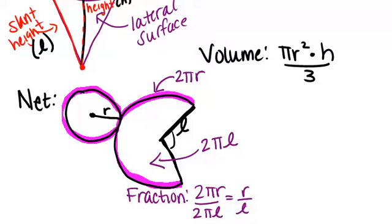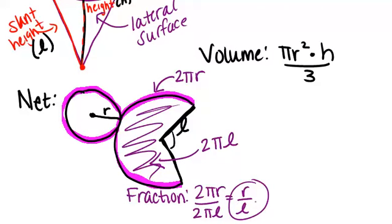Now we're trying to figure out what the area of this sector is. So since we know that this sector is r over l, that fraction of the whole circle, we can multiply that by what would be the area of this full circle in order to figure out the area of this sector. So we'll multiply this by pi l squared because that's the area of the full circle.